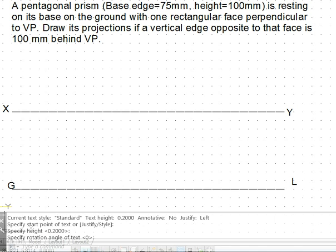We are given a pentagonal prism whose dimensions are available with us. The base is a regular polygon, so pentagonal prism means the base will be a regular pentagon, and the height of the solid is 100 mm.